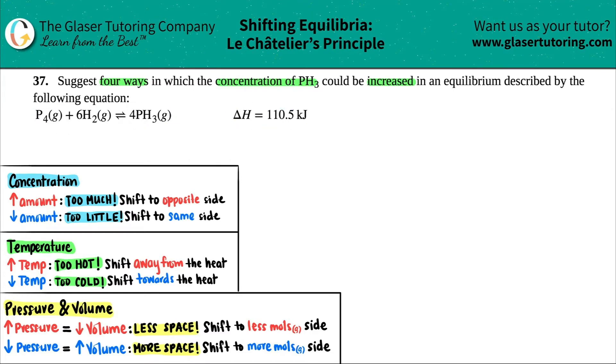So the first thing that I do, especially if we're talking about Le Chatelier's and they give me a delta H value, the first thing is I'm going to rewrite this equation just so that I can work with it a little bit better. So we've got P4 gas plus 6H2 gas, which comes to equilibrium with four PH3 gas.